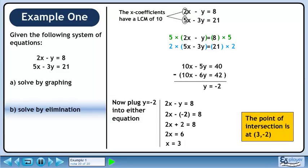The point of intersection is at 3 minus 2. This matches the solution in part A where the system was graphed.